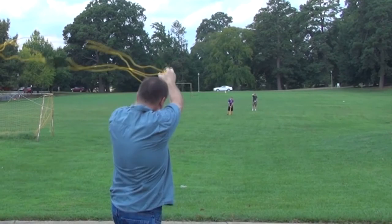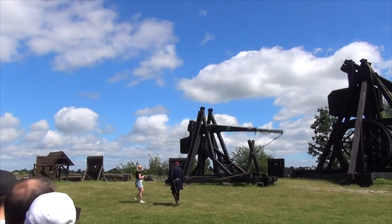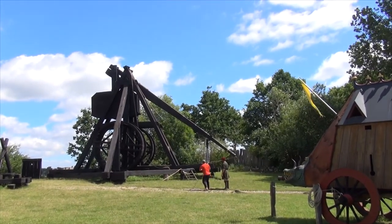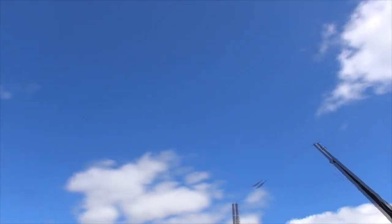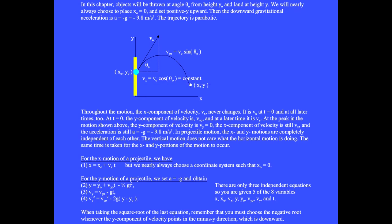Projectile motion occurs as objects travel horizontally at constant velocity while rising and falling in the vertical direction. Here is the x and y axis. In this chapter, objects will be thrown at angle theta zero from height y zero and land at height y. We will nearly always choose to place x sub zero equals zero and set the positive y direction upward. Then the downward gravitational acceleration is a equal minus g equal minus 9.8 meters per second squared. The trajectory is parabolic.